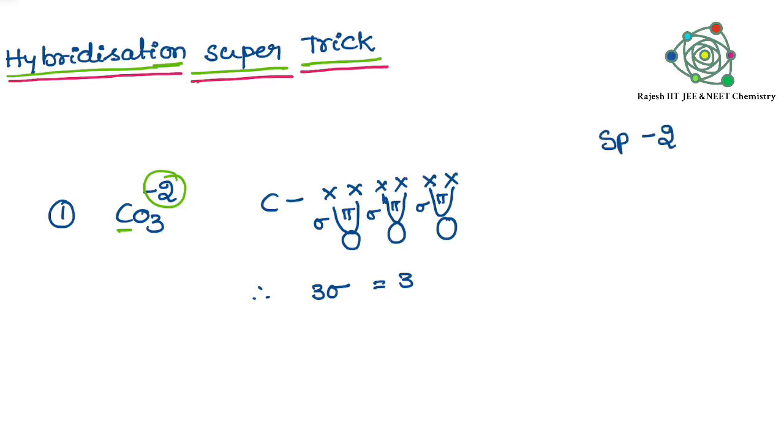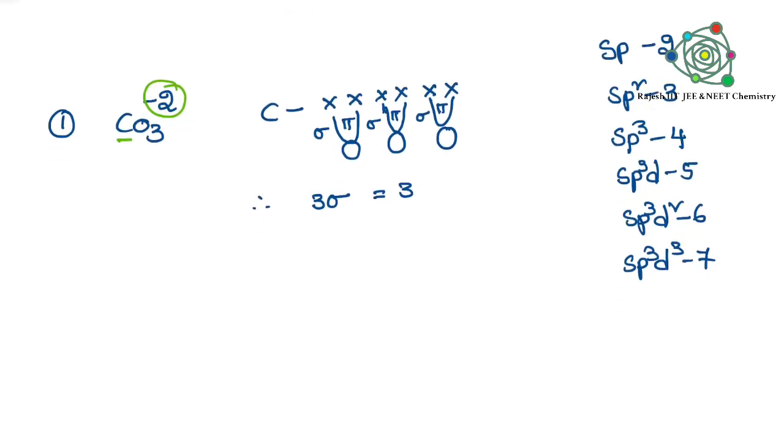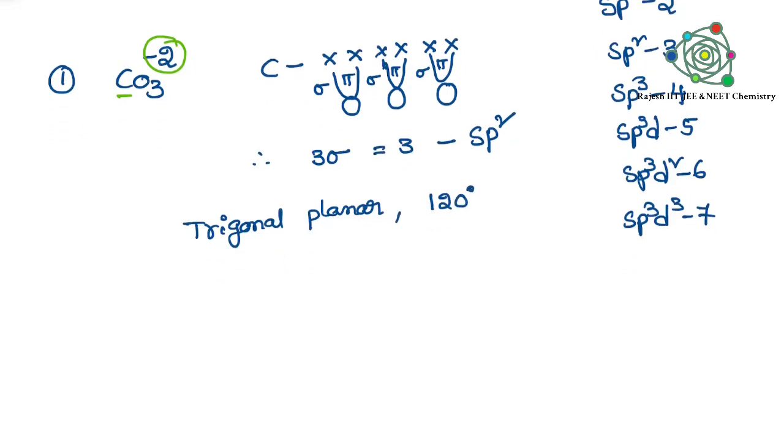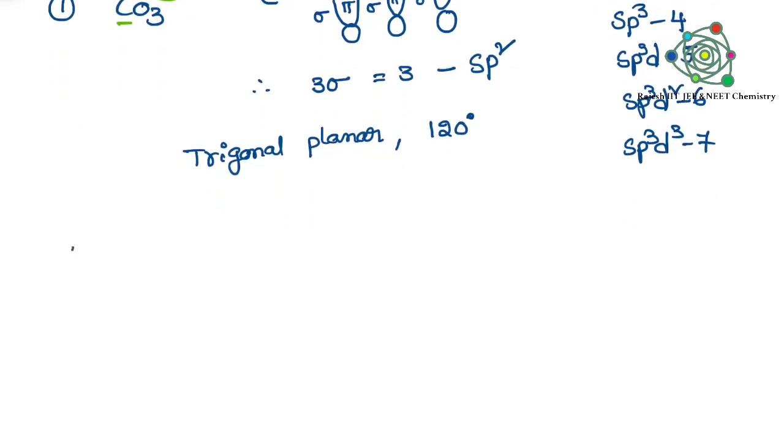Three sigma bonds means what? If you take this list, three means sp². So its hybridization is sp². Only sigma bonds affect the hybridization, not pi bonds. That is why I am taking only sigma bonds. sp² - generally all bond pairs, so trigonal planar and 120 degrees.